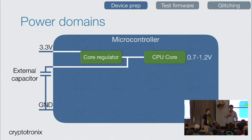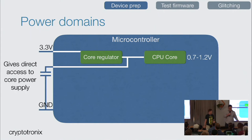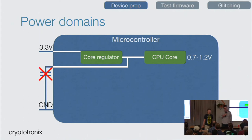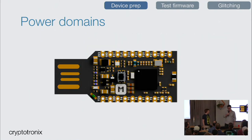These bypass capacitors are external to the chip, but they may actually provide a direct link into the core voltage — which is exactly the area you want to glitch. This is like a side-door entrance right into the CPU core. But we have that capacitor in the way, buffering the energy. Easy fix: we do some hardware hacking, remove the capacitor, and now we have direct access to the CPU core. VDD core is right there in the CPU core, and we can provide a voltage glitch directly.